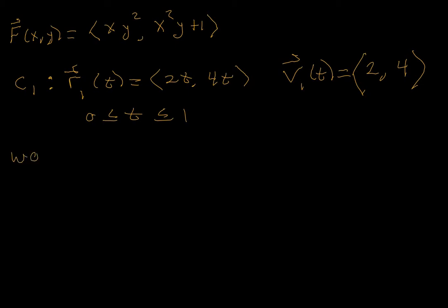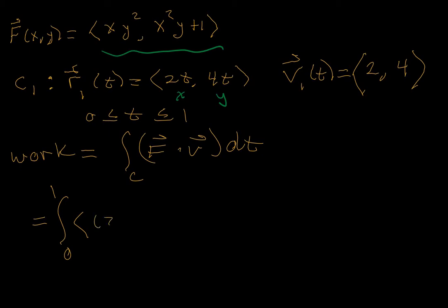And we set up our integral for work. F dot product velocity vector with respect to t. That's the actual formula. The time boundaries are 0 to 1. The vector field needs x and y values. Here are your x values and here are your y values that will get substituted into the vector field. So, x is 2t times y squared which is (4t)² comma x squared which is (2t)² times y 4t plus 1, dot product velocity vector <2, 4> with respect to t.